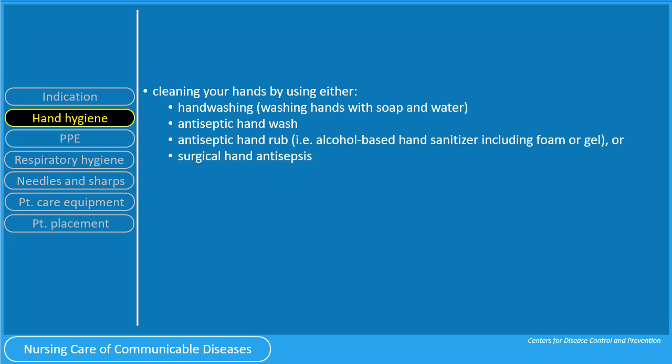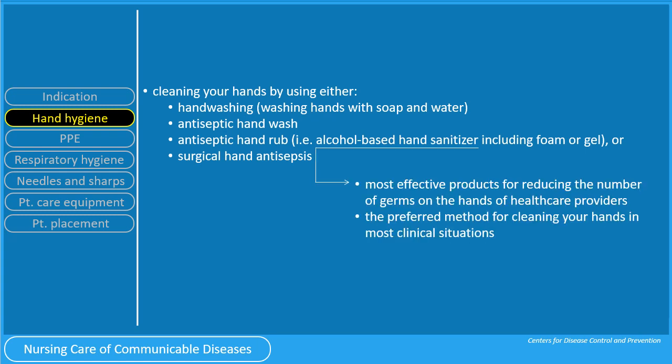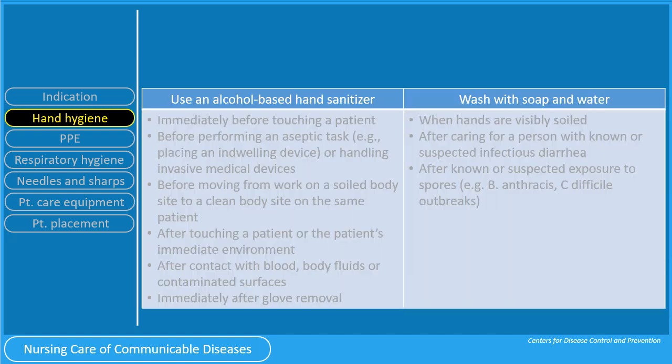Hand hygiene involves cleaning your hands by using either hand washing with soap and water, antiseptic hand wash, antiseptic hand rub, or surgical hand antiseptic. Alcohol-based hand sanitizers are the most effective products for reducing the number of germs on the hands of healthcare providers. It is also the preferred method for cleaning your hands in most clinical situations. There are conditions where alcohol-based hand sanitizer is preferred and conditions where soap and water handwashing is preferred.